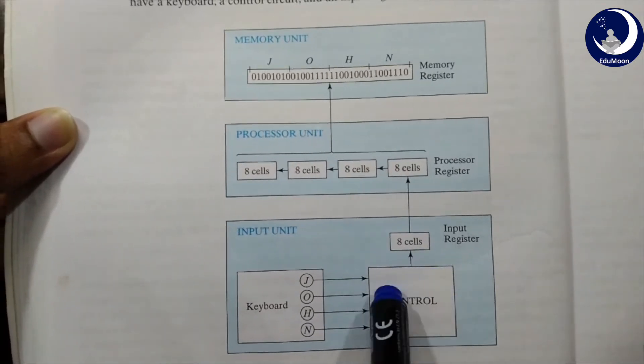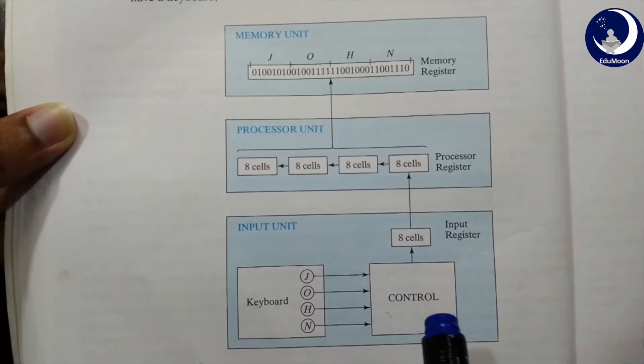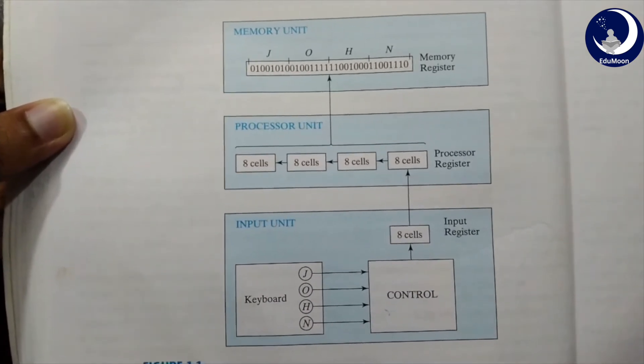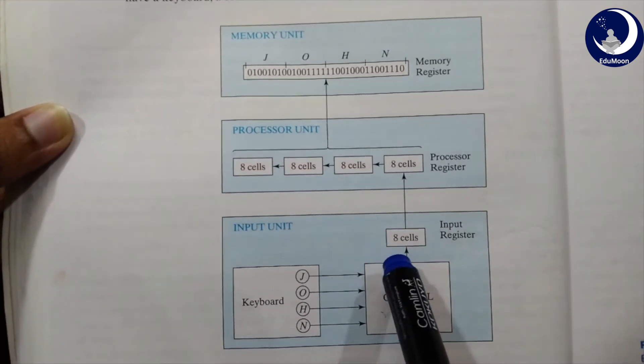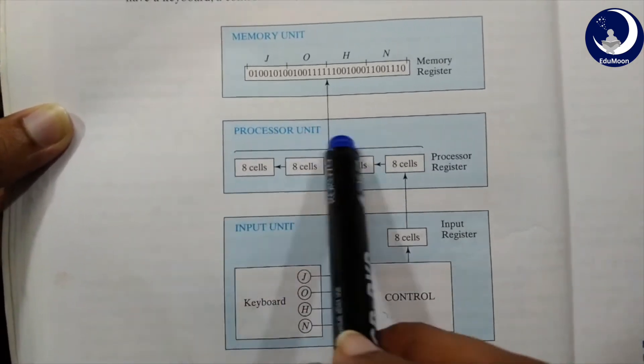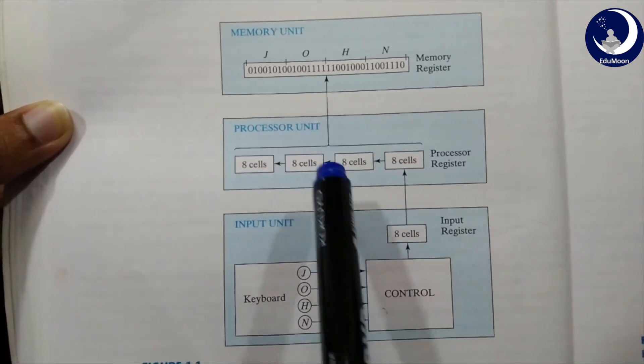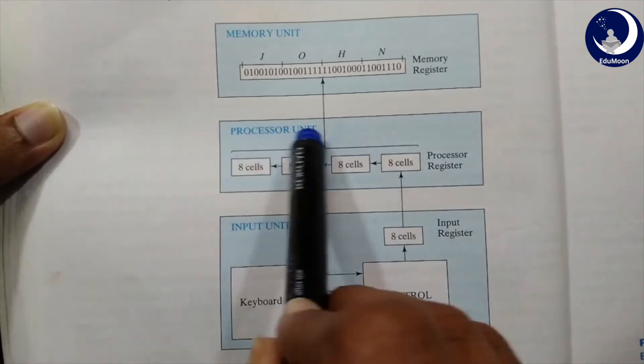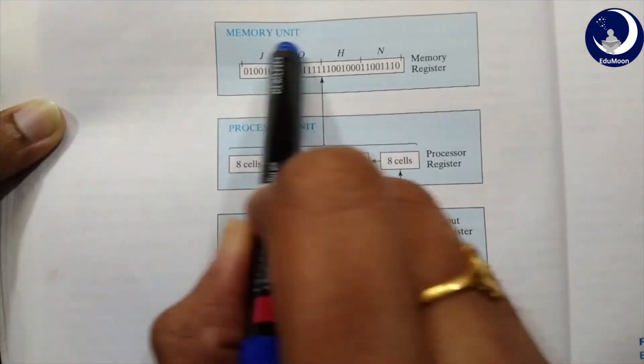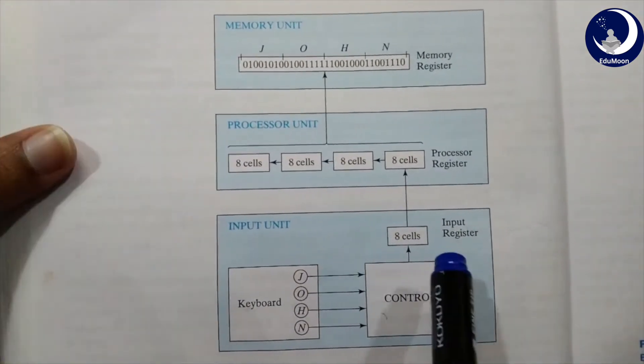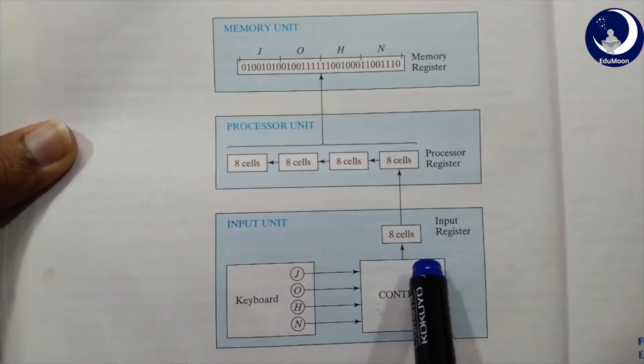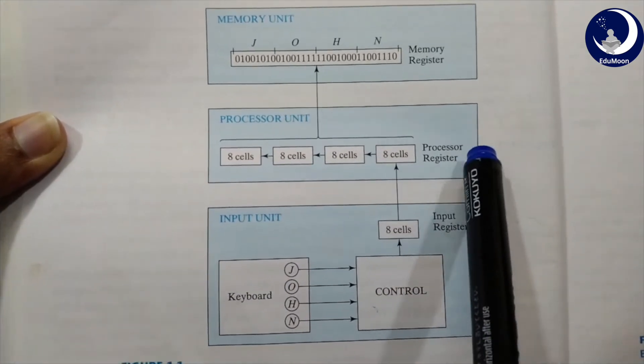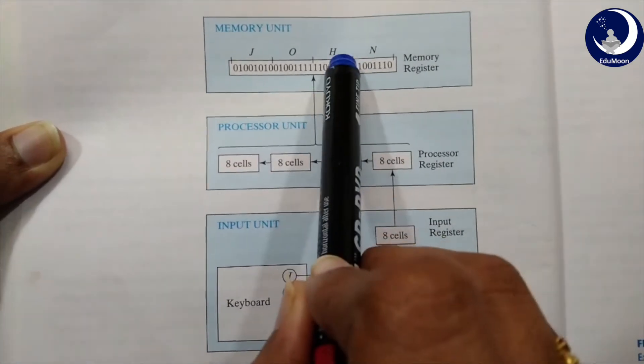In this way, this control will be producing 8-bits. These 8-bits represent the ASCII code character values. The information from this input register is then transferred into the 8-bit, least 8-bits of the processor unit. The processor unit will be having processor registers. Each and everything will be having registers. Input unit will have input registers. Processor unit will have processor registers. Memory unit will have memory registers. As soon as these 8-bits are entered from input register to the processor register, the least 8-bits are filled. After filling of these 8-bits, these are then transferred into the memory register.